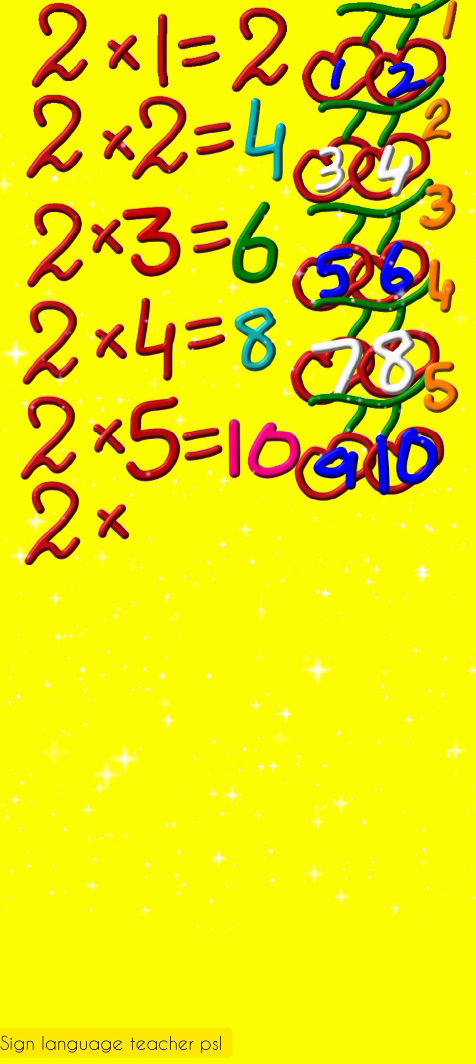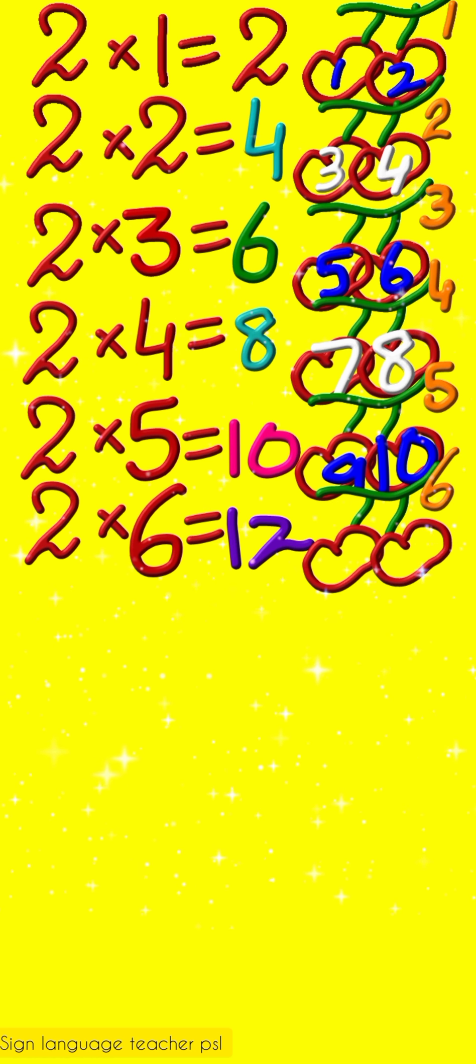Just add two more cherries or two more numbers and get your answer. Two sixes are twelve. Adding two more cherries, it will become twelve. Eleven, twelve.